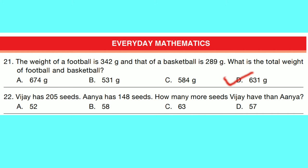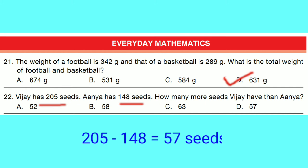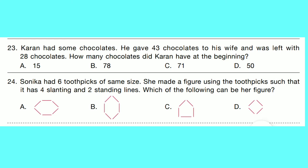Question number 22: Vijay has 205 seeds and Anya has 148 seeds. How many more seeds does Vijay have than Anya? Difference: 205 minus 148 equals 57. Option D is correct — Vijay has 57 more seeds than Anya.